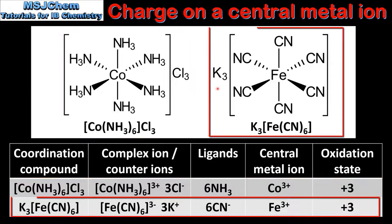In the example on the right, the counter ions are 3 potassium ions which have a charge of 1+. This tells us that the charge on the complex ion is 3-. The central metal ion is an iron ion and the ligands are 6 cyanide ions. Cyanide ions have a charge of 1-, and there are 6 of them, so the total charge is 6-. Subtracting the total charge on the ligands from the charge on the complex ion, the charge on the iron ion is 3+ and the oxidation state is +3.